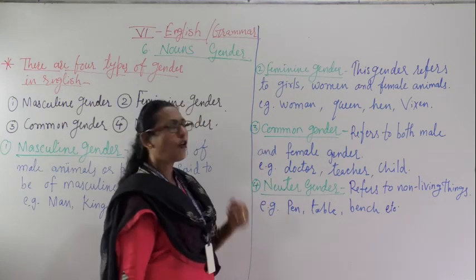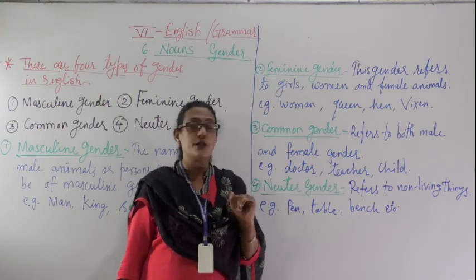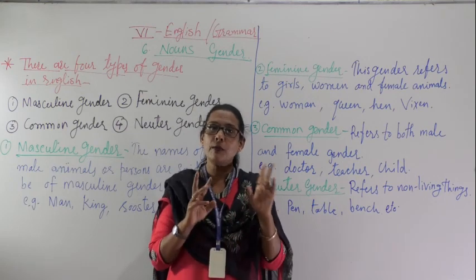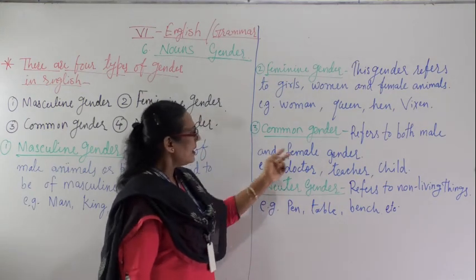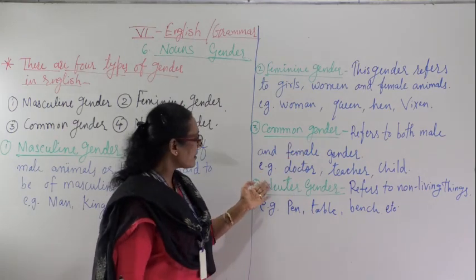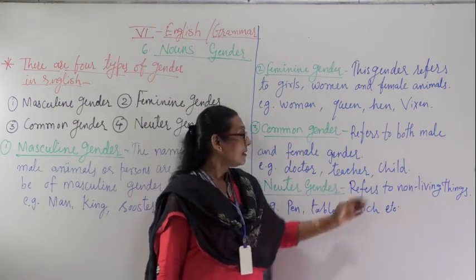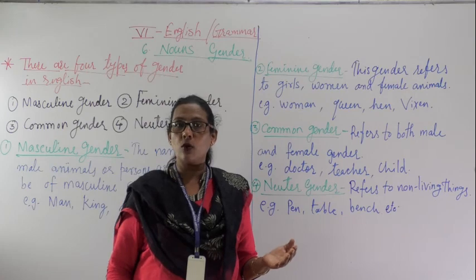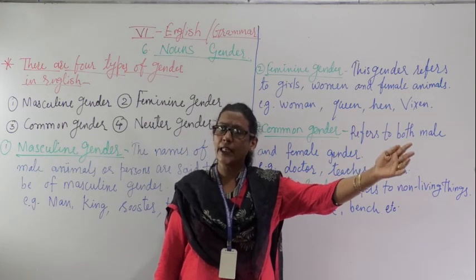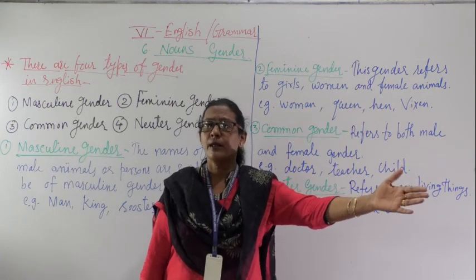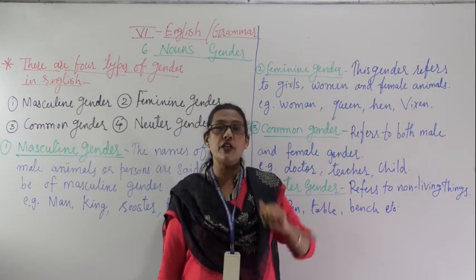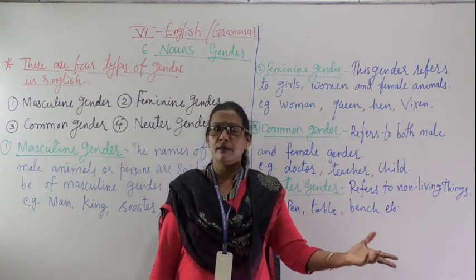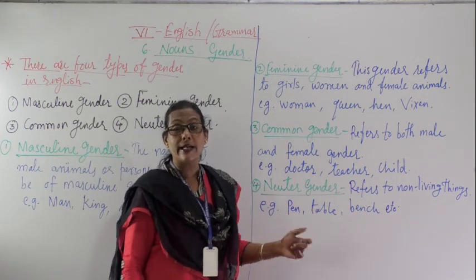That is Feminine Gender. Now we see Common Gender. Common Gender refers to both male and female — that is called Common Gender. For example: Doctor, Teacher, Child. If I say 'go and call the doctor,' that doctor may be a woman or may be male. Go and see which teacher is teaching there — may be female or may be male. So that is Common Gender.